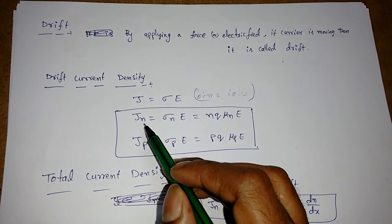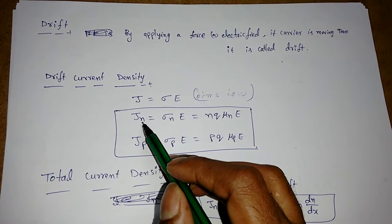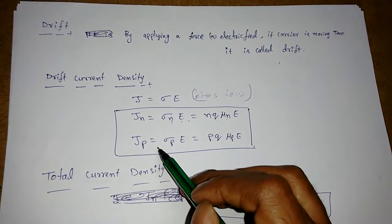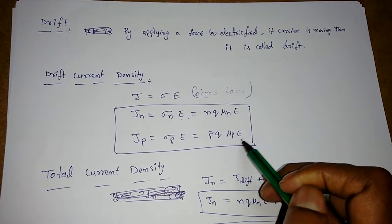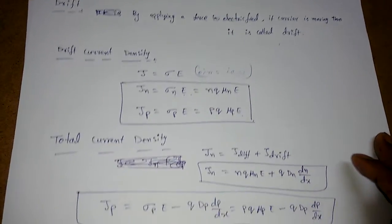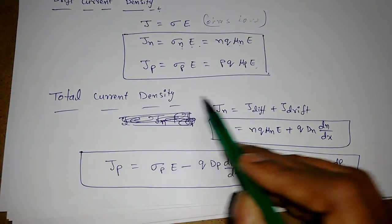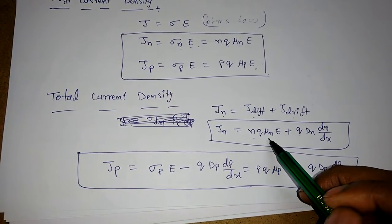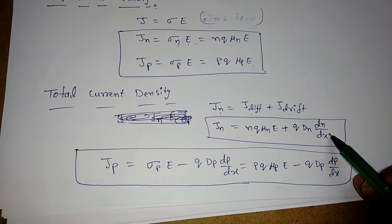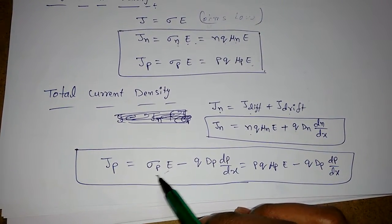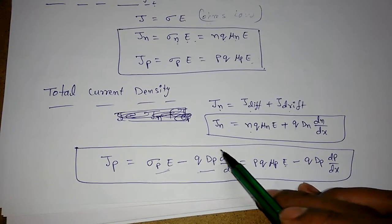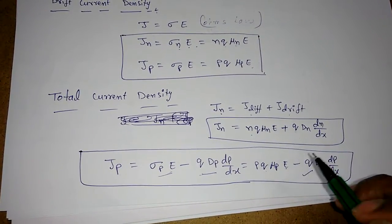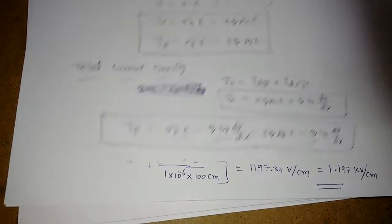The electron drift current density is Jn = σn × E = n × q × μn × E, and for holes Jp = p × q × μp × E. The total current density for electrons includes both diffusion and drift: Jn = n × q × μn × E + q × Dn × (dn/dx). Similarly, the total hole current density is Jp = p × q × μp × E − q × Dp × (dp/dx).